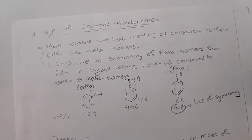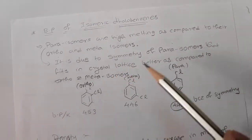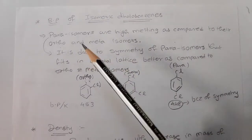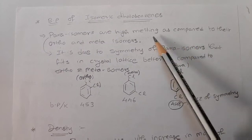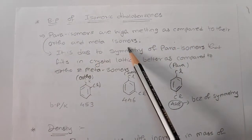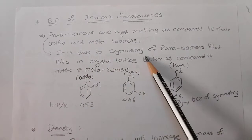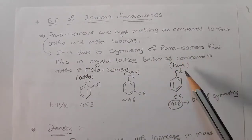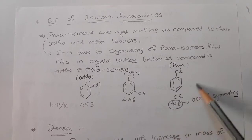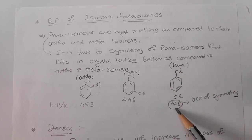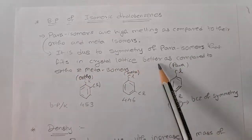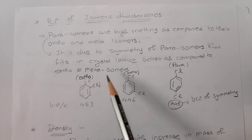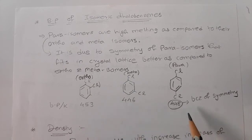When we talk about boiling point of isomeric dihalobenzenes — aromatic compounds — para isomers have a higher melting point compared to their ortho and meta isomers. This is due to the symmetry of the para isomer, which fits into the crystal lattice better than ortho and meta. So para compounds have the higher boiling point compared to ortho and meta.